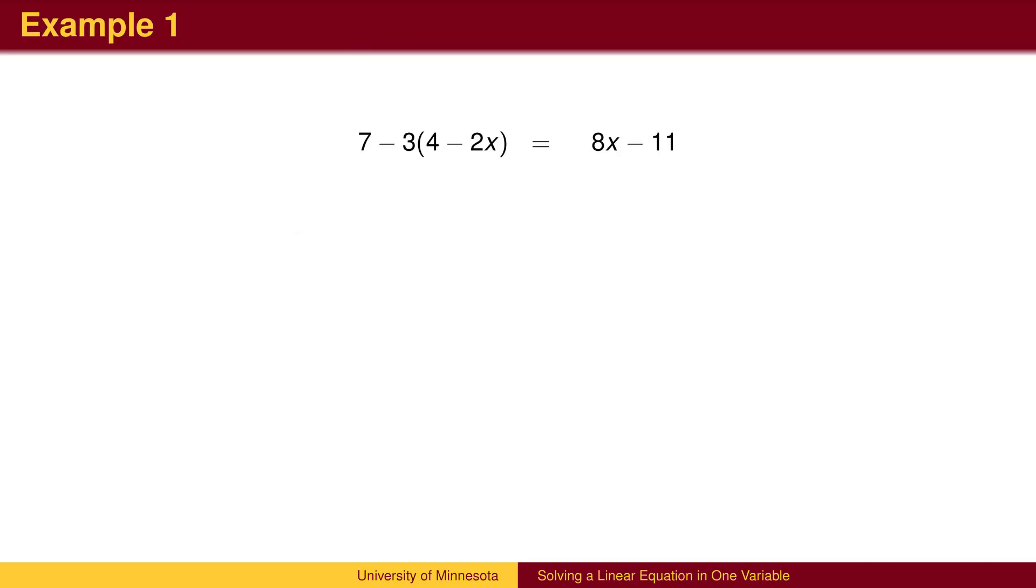Here is an example. We wish to find the values for x which make the equation true. It turns out that in this type of equation we will never get more than one answer unless the two sides of the equation are the same expression.